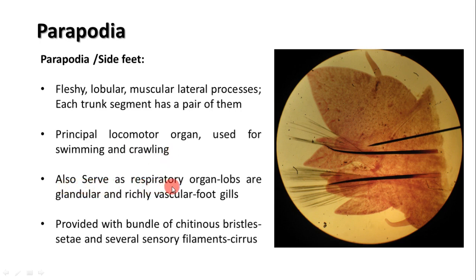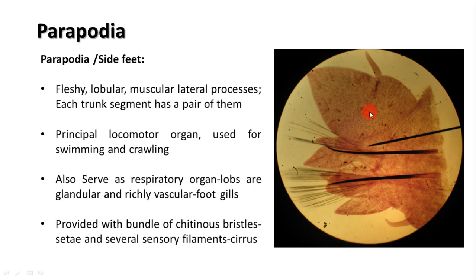Parapodia also serve as respiratory organs because their lobes are glandular and richly vascular; thereby they are called foot gills. The parapodia perform respiratory functions because they are highly vascular — numerous blood vessels are supplied to the parapodia. They are also very thin, so gas exchange takes place on the surface of the parapodia, which is why they are called foot gills.